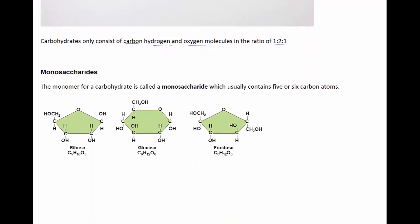The monomers for carbohydrates are called monosaccharides and they usually contain 5 or 6 carbon atoms. These are often called simple sugars.